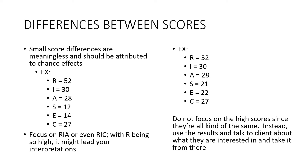Small score differences are meaningless and should be attributed to chance effects. For example, on the RIASEC, if R is 52, I is 30, A is 28, S is 12, E is 14, and C is 27 — you focus on RIA, or even RIC since 27 and 28 are very close. With R being highest at 52, it leads the interpretation, so you prioritize R-based careers and use the Holland code in order of highest scores.